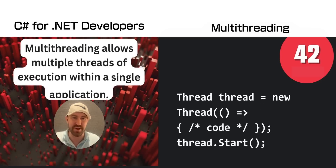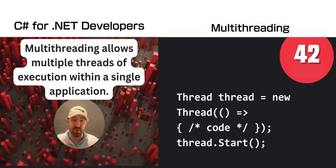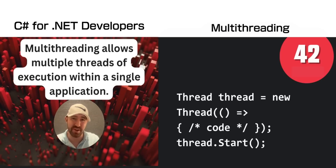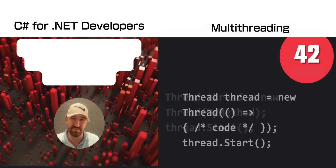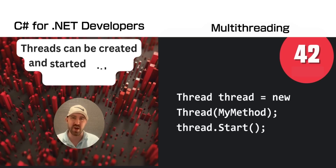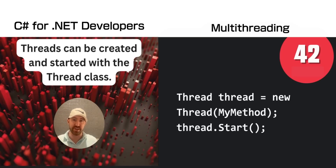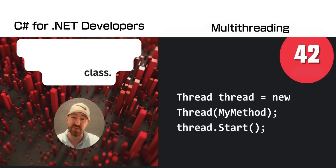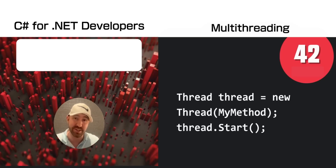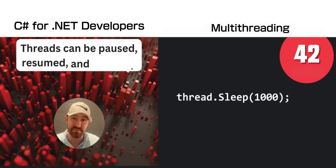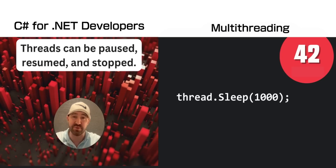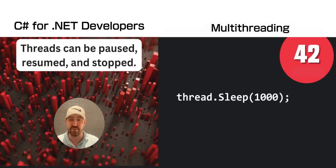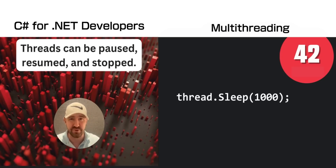In C#, multi-threading allows multiple threads of execution in the same application. Here's an example of using the Thread class to create threads, and you use the Start method to kick them off. Threads can be paused, resumed, and stopped, but you've got to be careful because you will get into trouble with them.